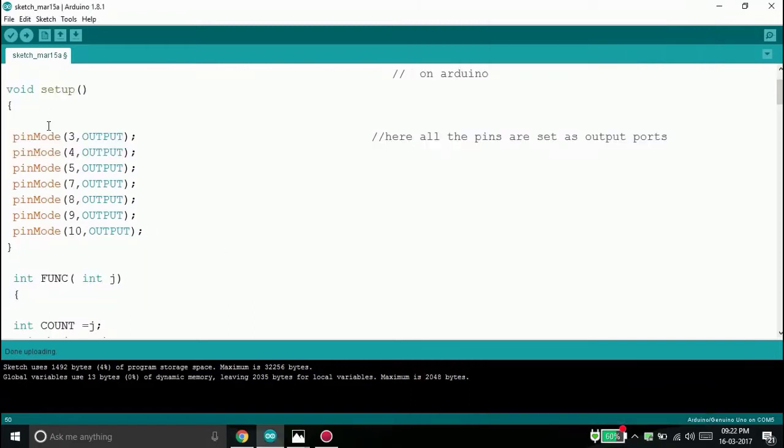Void setup. Now here we enter the program. This function pin mode sets the ports 3, 4, 5, 7, 8, 9 and 10 as output ports.